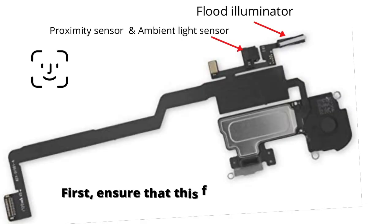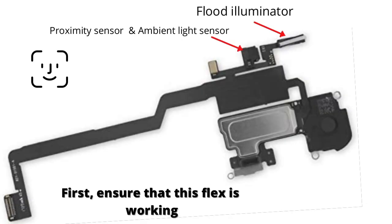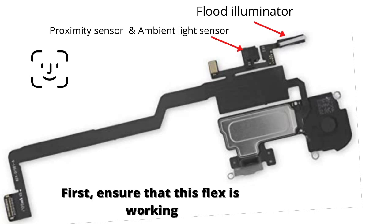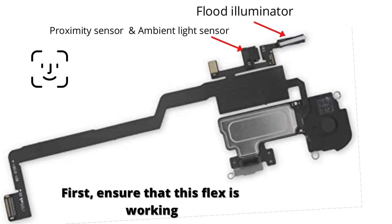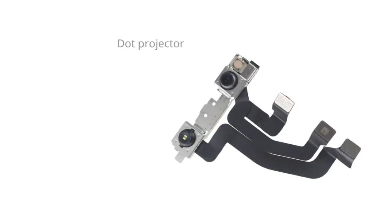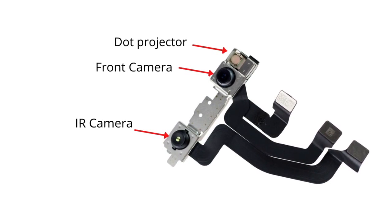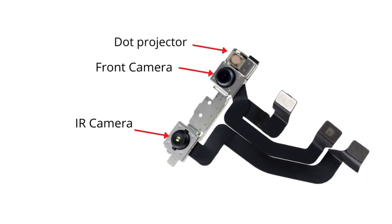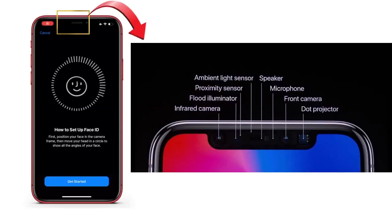Face ID is a complex system with so many parts working together. The main parts are on the upper LCD side, on the ear speaker flex side. There is the flood illuminator, ambient light sensor, and proximity sensor. Below, you can see the dot projector, IR camera, and front camera. All of these play important roles in Face ID. If there is a problem with any of these parts, then you will encounter Face ID related issues.